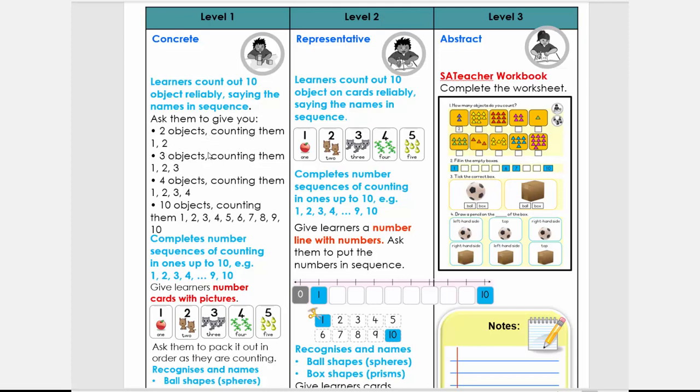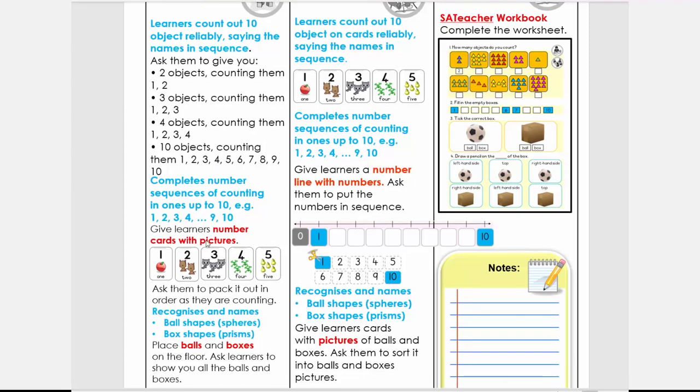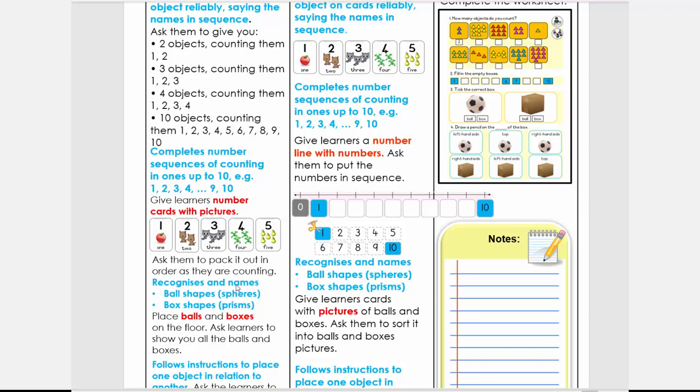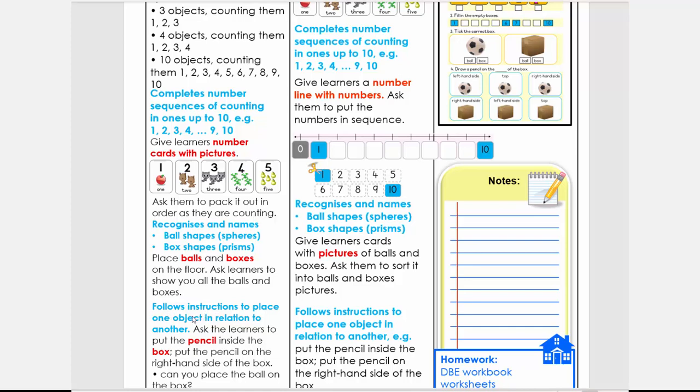So you're going to ask them questions like: show me two objects. Count them: one, two. Show me three objects. And they're going to count them: one, two, three. And you do then four objects, and you carry on until they count it 10 objects. You can then also ask, give learners cards with pictures on them, and they can place them in the correct sequence. Then we already did this in the previous activity where they're going to recognize ball and box shapes. And then lastly is where they're going to follow instructions. Remember they need to work with physical things like pencils, boxes, food in the kitchen, cups, glasses, pots, pans, all those type of things that you can use in your at home or in class.